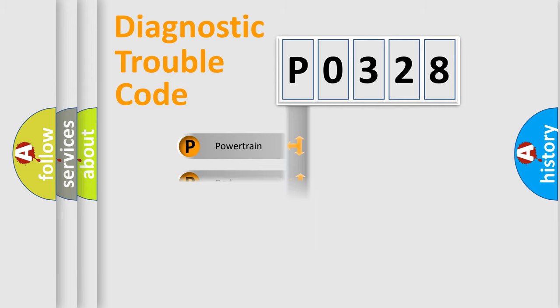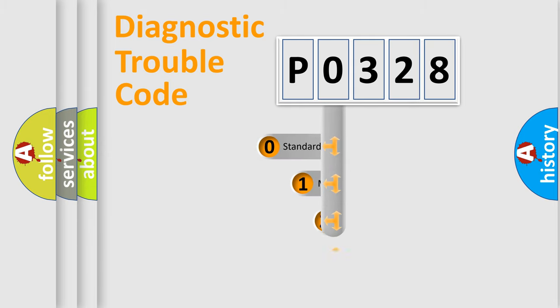Powertrain, body, chassis, network. This distribution is defined in the first character code.